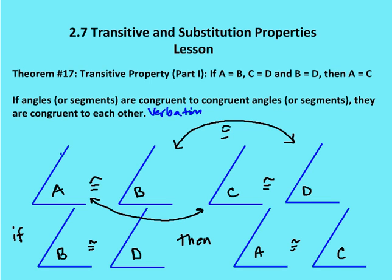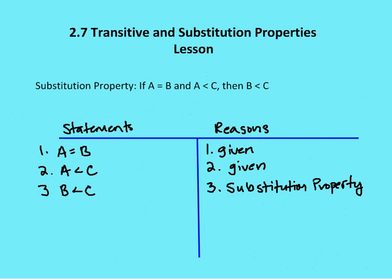Now substitution uses similar reasoning. In substitution, if A is equal to B and A is less than C, then B, because it's equal to A, must also be less than C. In a two-column proof you might write: A equals B — given; A is less than C — given; therefore B is less than C — substitution property. All we're doing, given the equality of A and B, is substituting B for A.